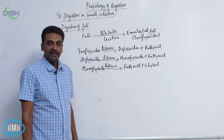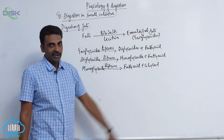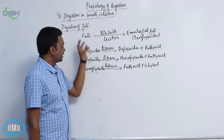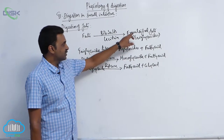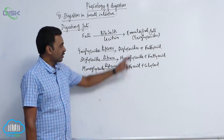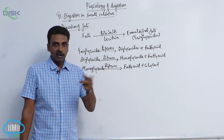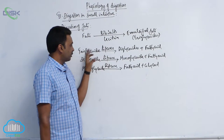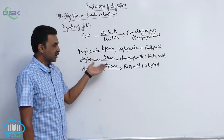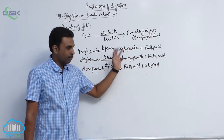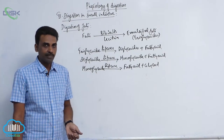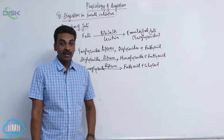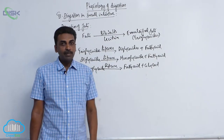To summarize fat digestion: large fat droplets are first converted into smaller fat droplets through emulsification, aided by bile salts and lecithin. The emulsified fats contain triglycerides, which are acted upon by pancreatic lipase (steapsin) and intestinal lipase. They sequentially break triglycerides into diglycerides, monoglycerides, and finally three fatty acids plus one glycerol.